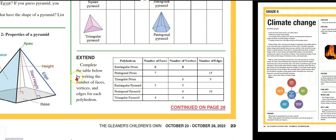Extend. Complete the table below by writing the number of faces, vertices, and edges for each polyhedron. So, polyhedron name: rectangular prism, pentagonal prism, triangular prism.